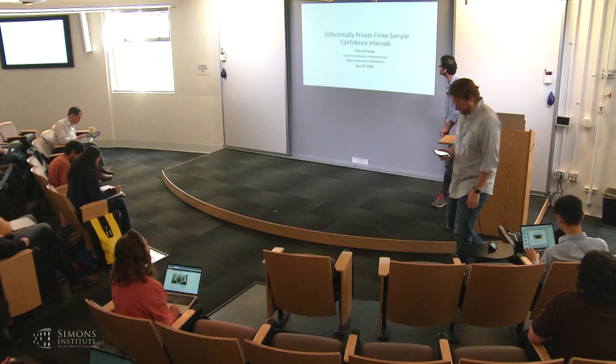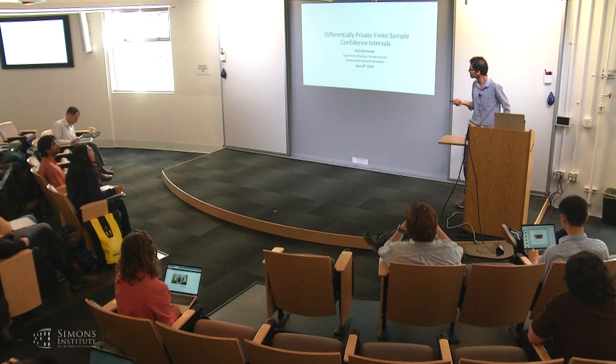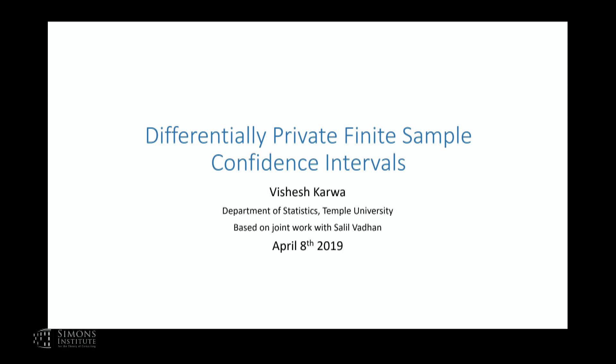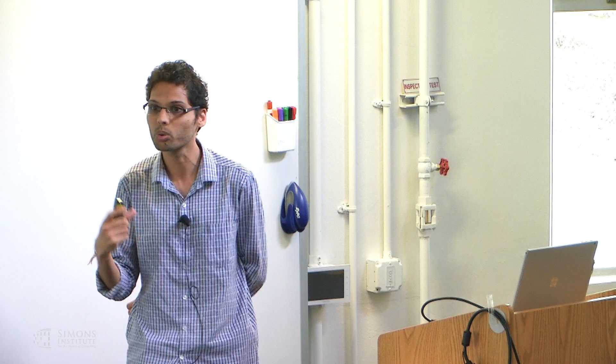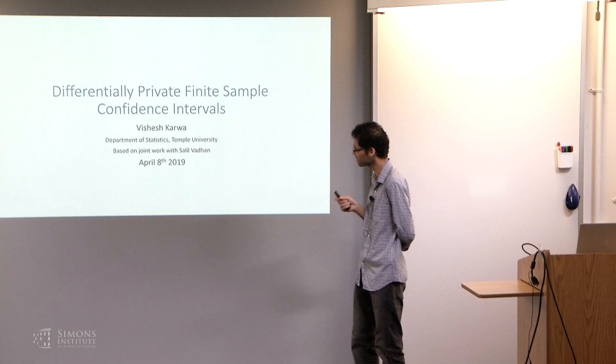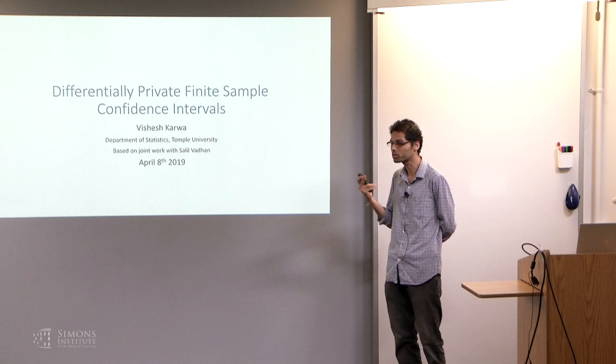Thank you everybody. This is a long title, but basically there are three things. I want to talk about differential privacy, obviously, because this is a privacy workshop. I want to talk about confidence intervals, which are very central in statistical inference. The main emphasis is going to be on how you do this in finite samples when you have small sample sizes like 100, 200, 300, or 1000 or 5000 — considered very small in social sciences, where you don't have a lot of data but still want to do something meaningful with differential privacy.